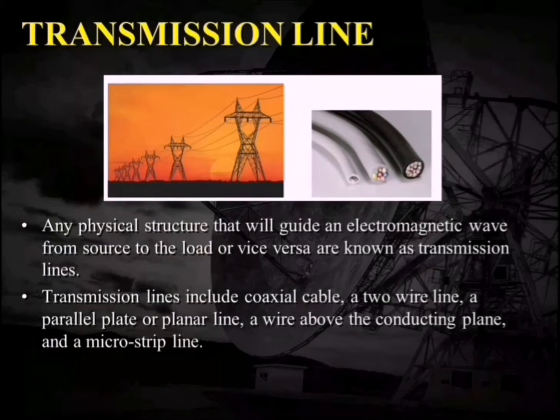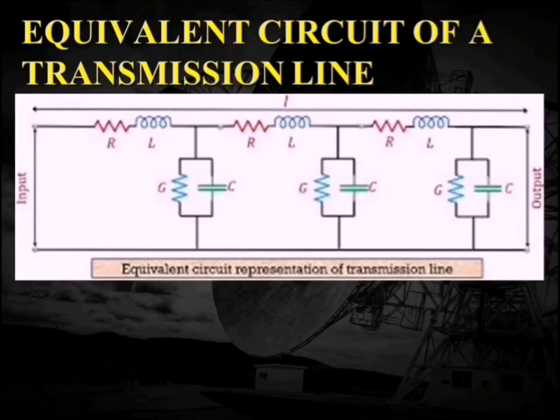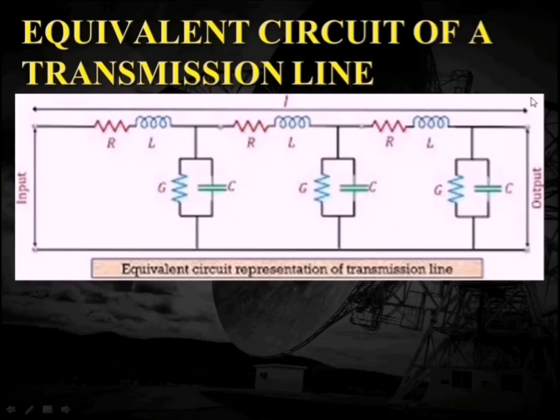The major concern here is the equivalent circuit of a transmission line. We use resistor R, inductor L, conductance G, and capacitance C to denote the length of the transmission line. We have already concluded that lumped circuits cannot be used for high frequencies, but here we assume this small part — which is repeated continuously along the whole length of the transmission line — uses lumped circuits. These parts continuously repeat along the length.